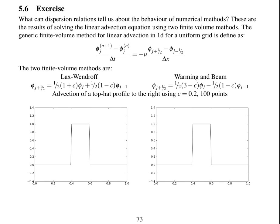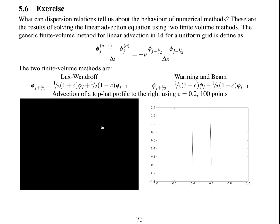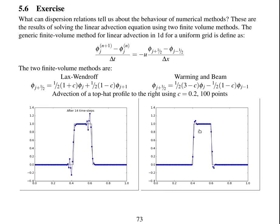So the two finite volume methods we're looking at: the Lax-Wendroff method which is defined like this with phi j plus a half equal to this expression, and the Warming and Beam method has phi j plus a half defined with this expression. This is advection of a top hat profile, advecting to the right using Courant number of 0.2 and 100 points.